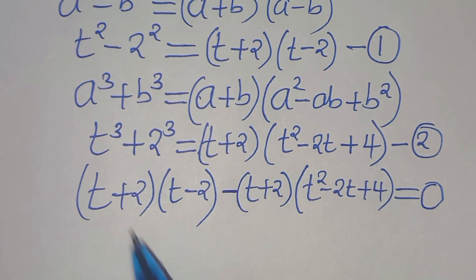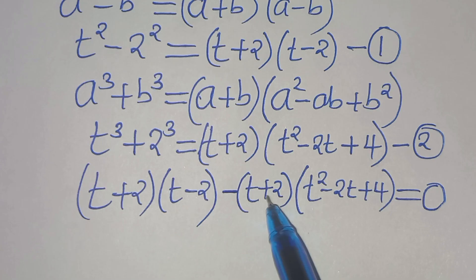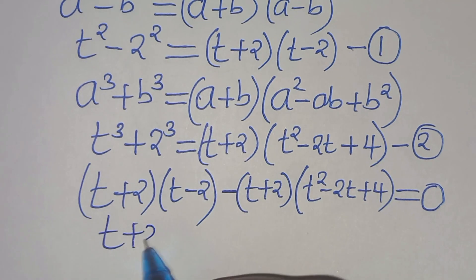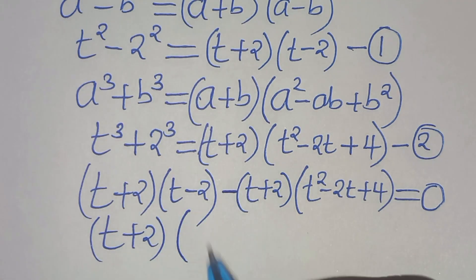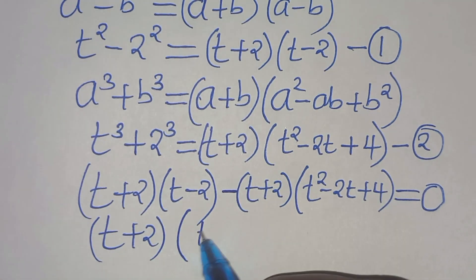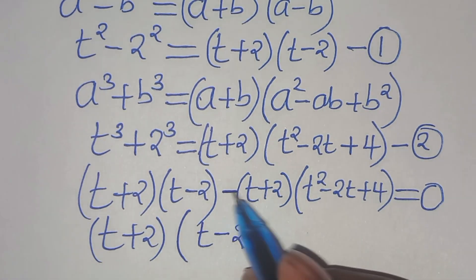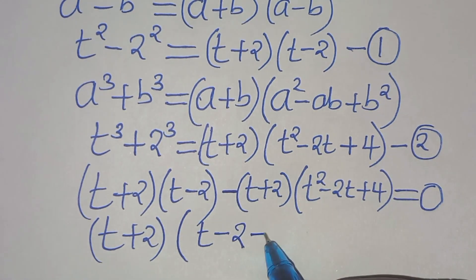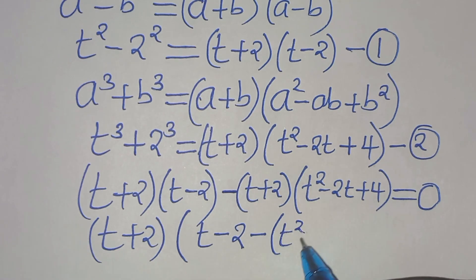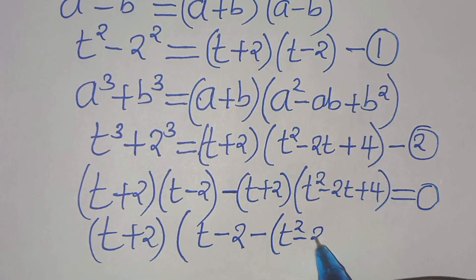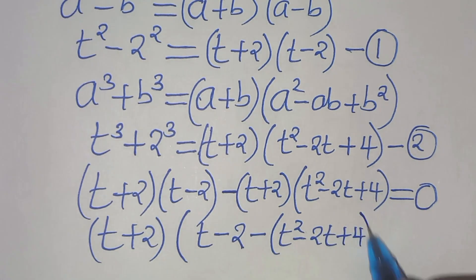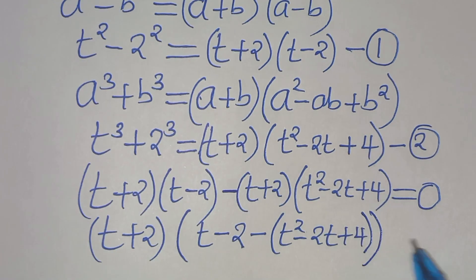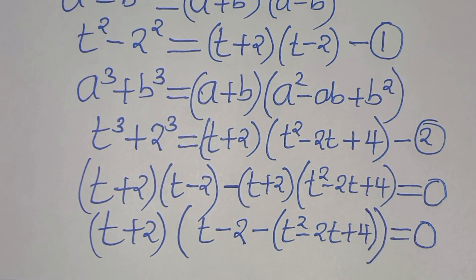We can see that t plus 2 is common in both terms, so we factor out t plus 2. Inside the parentheses we have t minus 2, then minus t squared minus 2t plus 4. This equals 0.